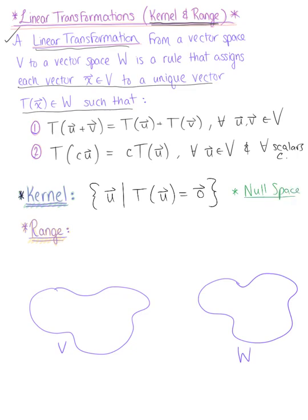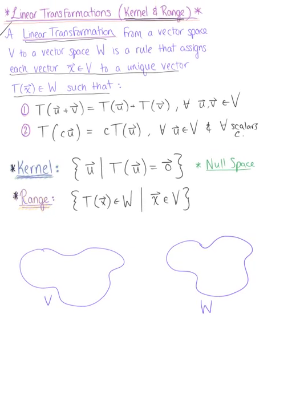We also define the range as the set of all images of vector x under the action of T in vector space W, such that vector x is an element of vector space V. This tells us that every vector in vector space V maps to some area in vector space W.